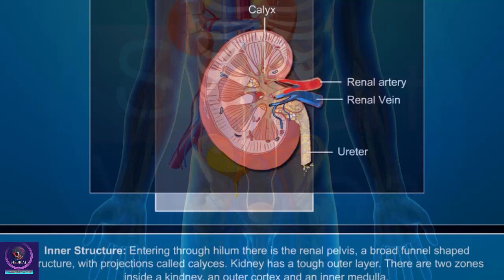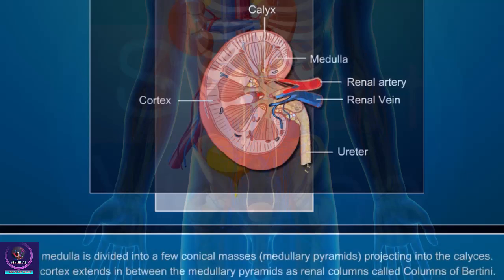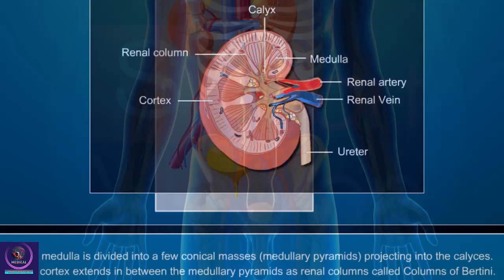The kidney has a tough outer layer. There are two zones inside a kidney: an outer cortex and an inner medulla. The medulla is divided into a few conical masses called medullary pyramids projecting into the calyces. The cortex extends in between the medullary pyramids as renal columns called columns of Bertini.